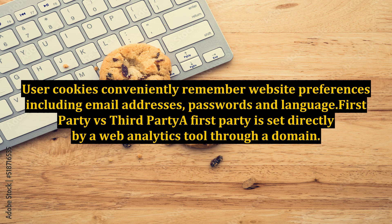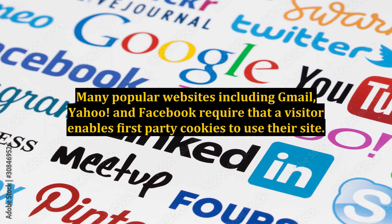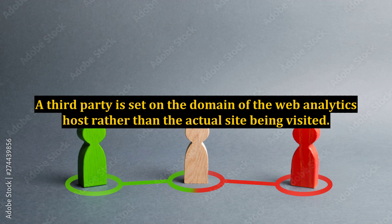First party versus third party: A first party cookie is set directly by a web analytics tool through a domain. Many popular websites including Gmail, Yahoo, and Facebook require that a visitor enables first party cookies to use their site. A third party cookie is set on the domain of the web analytics host rather than the actual site being visited. Third parties are most prevalent in cases where a web analytics host wants to track a user's behavior for marketing purposes. Third parties are less common than first parties because they're often deleted or rejected.